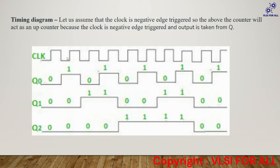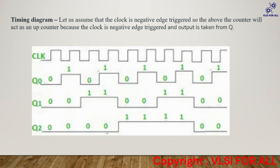Since we have taken negative-edge triggering, this acts as an up counting sequence. The clock is given to the first flip-flop and all flip-flops are in toggle mode, so at every negative edge of the clock the first flip-flop output toggles — from 0 to 1 and back at each negative edge. The output of the first flip-flop is given as the clock to the second flip-flop, so at the negative edge of Q0 the output Q1 toggles. Similarly, Q1's output is the clock to the third flip-flop, so at the negative edge of Q1, Q2 toggles.